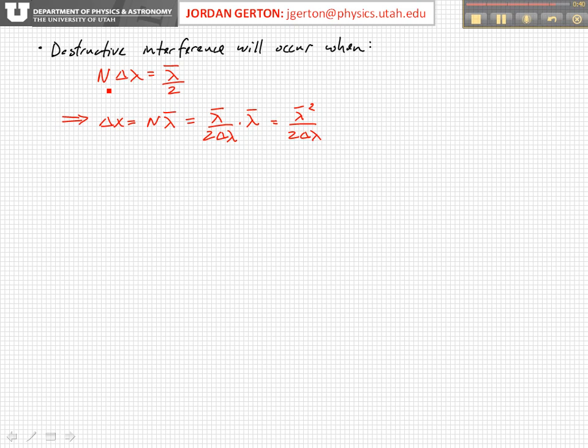And so we basically have this relationship, and this is the relationship that we wrote on the previous view graph, and so if we then just put these two together, then you get that delta x is equal to lambda bar squared, the average wavelength squared, divided by two times delta lambda.